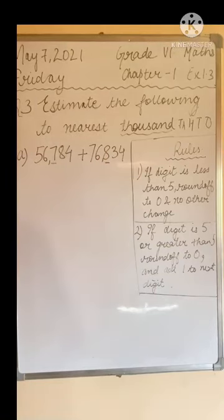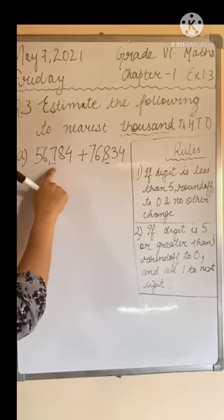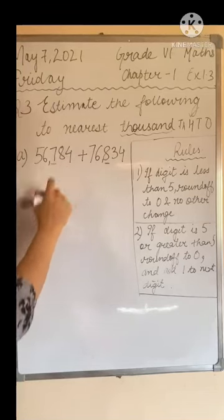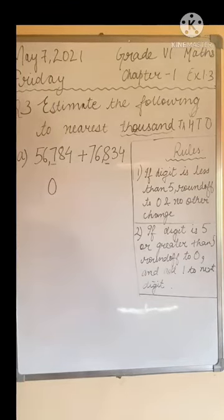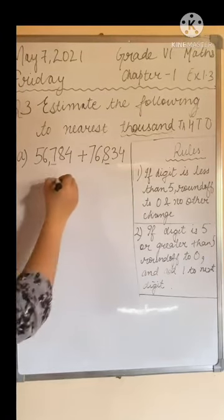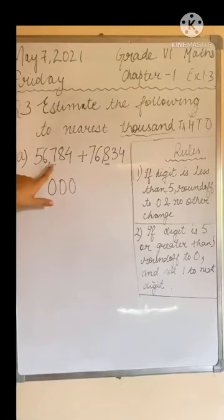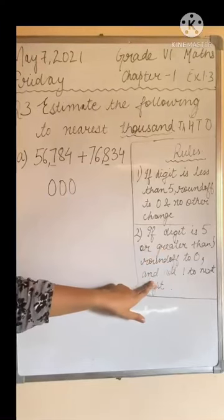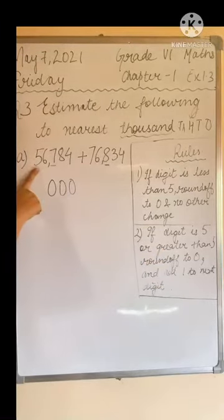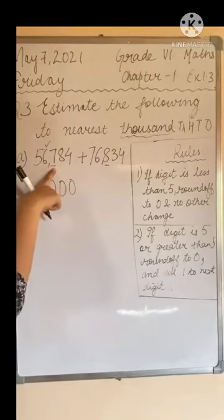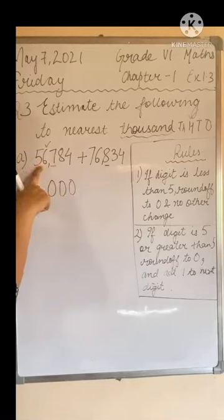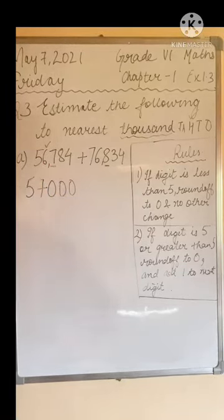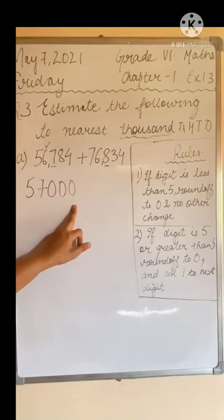The first step is to round off that digit to 0, and all digits that come after it will also be rounded off to 0. Here, 7 is rounded off to 0, and there are two digits after 7 — they will also be rounded off to 0. Since 7 is greater than 5, rule number 2 applies: round off to 0 and add 1 to the next digit. The next digit is 6, so 6 plus 1 becomes 7. The rest remain the same.